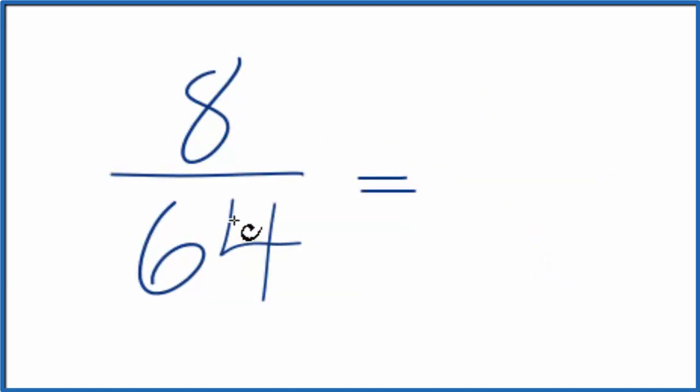Since they're both even, we can divide the numerator and denominator by 2. 8 divided by 2 is 4, and 64 divided by 2 is 32. Then you should know that 4 times 8 is 32.